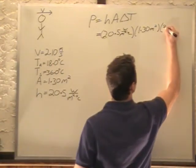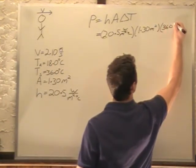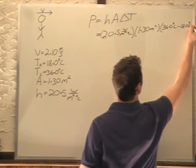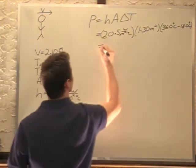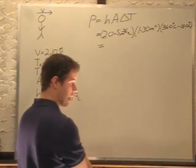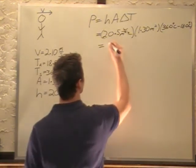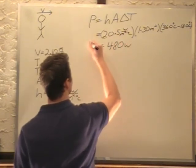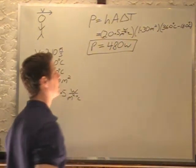36.0 degrees Celsius minus 18.0 degrees Celsius. Now if we plug all those into our calculator, we get a power of 480 watts. Final answer.